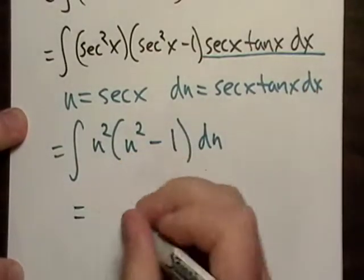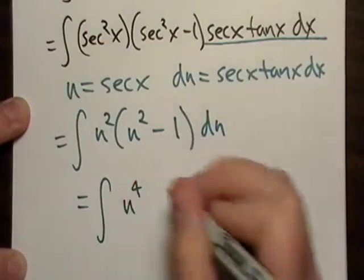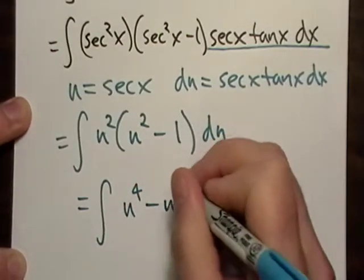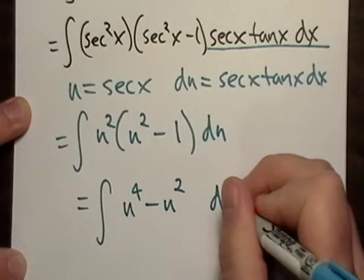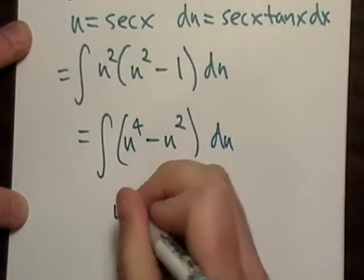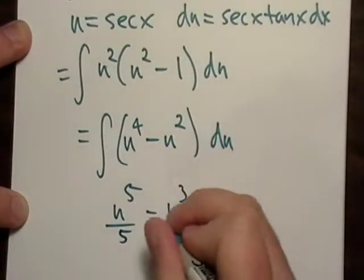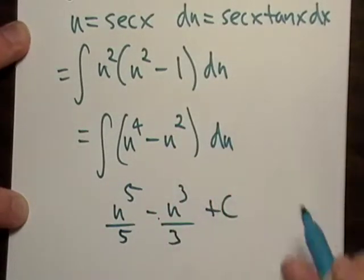And this is going to be equal to u to the fourth minus u squared du, don't forget your parentheses, and of course u to the fifth over five minus u to the third over third plus C.